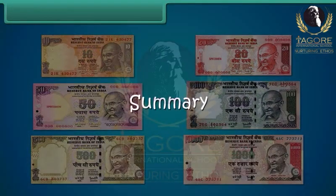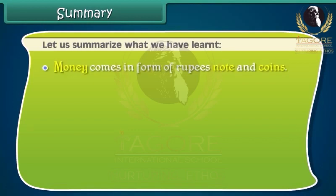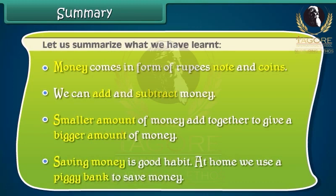Let us summarize what we have learned. Money comes in the form of rupee notes and coins. We can add and subtract money. Smaller amounts of money add together to give a bigger amount of money. Saving money is a good habit. At home, we use a piggy bank to save money.